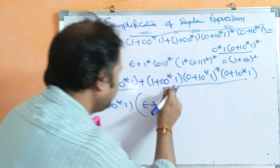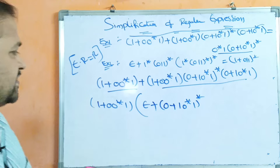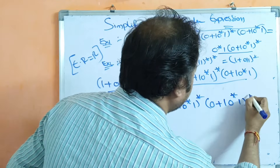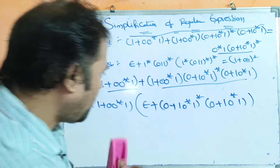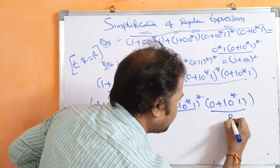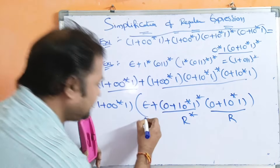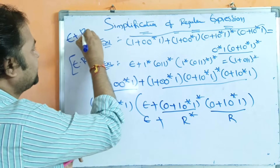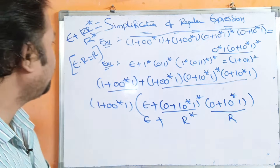After factoring, the remaining expression inside the brackets is: ε + (0+1)(0*1)* · (0+1)(0*1)*. If we let R = (0+1)(0*1)*, then this becomes ε + R*R, which is in the form ε + R*R. The formula is: ε + RR* = R*, so this simplifies to R*. Therefore the whole expression becomes (1 + 00*1) · ((0+1)(0*1)*)* .